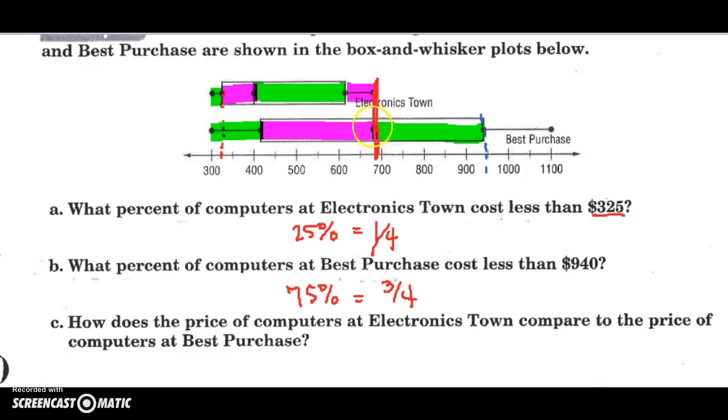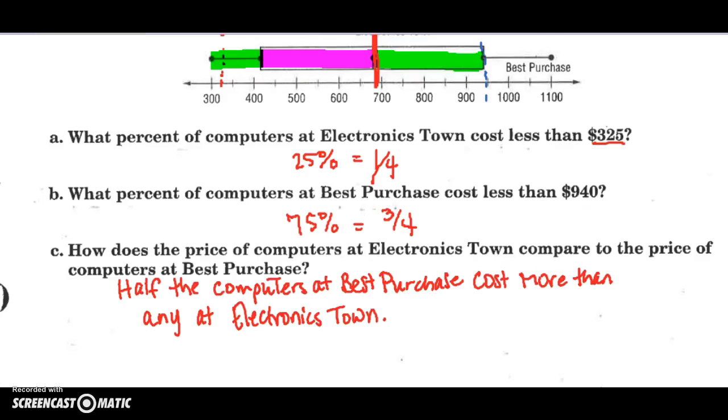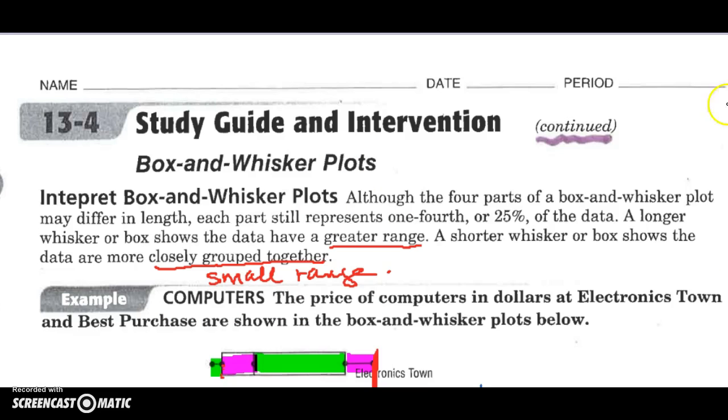So it looks to me like half, well, at least half of the computers at Best Purchase are going to cost more than Electronic Town. Okay, so I wrote that down. Half the computers at Best Purchase cost more than any at Electronic Town.